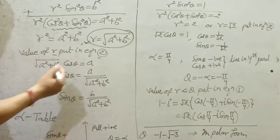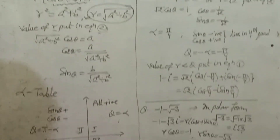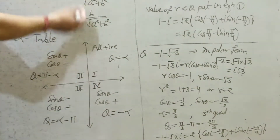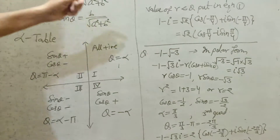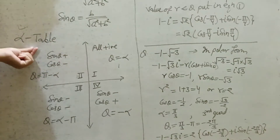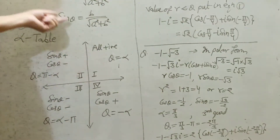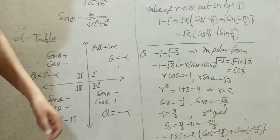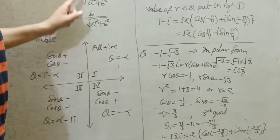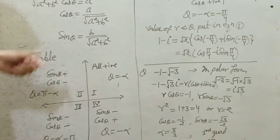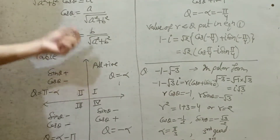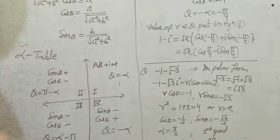After calculating sine theta and cos theta, first find alpha from the table. To find alpha, take the numerical value without considering the sign — ignore any minus sign. From the table, take values between 0 and 90 degrees using positive numerical values only. This gives you alpha.